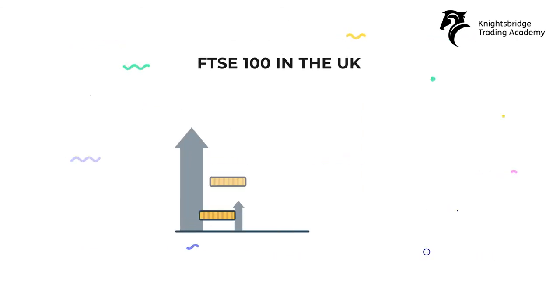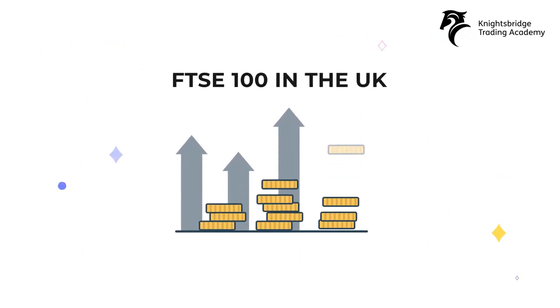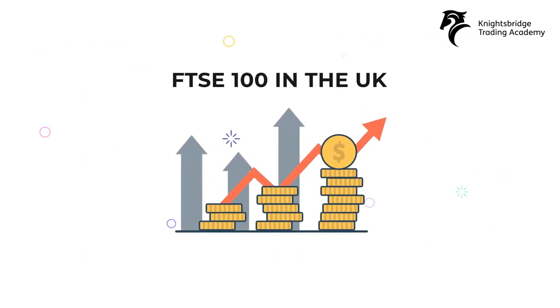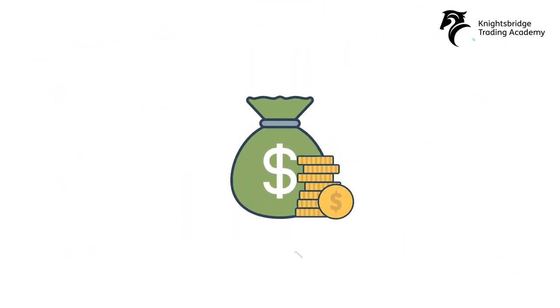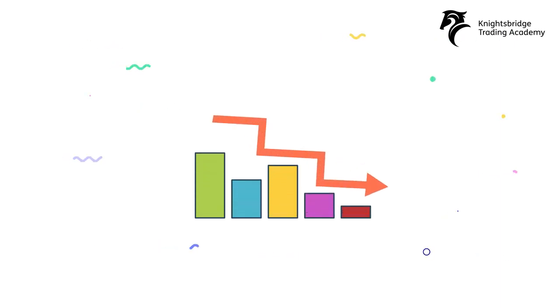If you believe the FTSE 100 in the UK is going to perform well, there's a CFD that allows you to profit when it does. If the DAX looks set for a fall, you can trade a short position for a profit too.